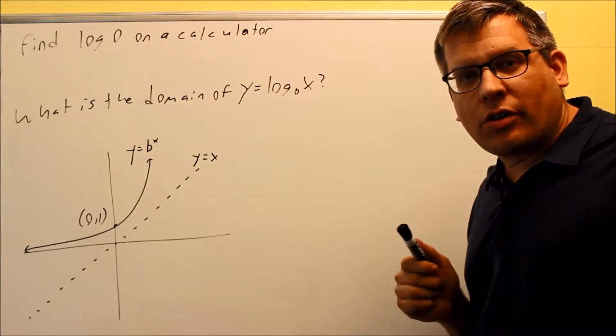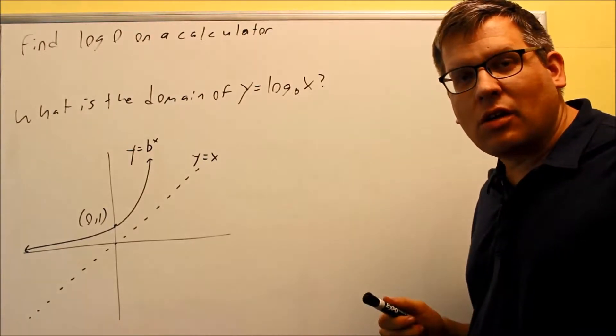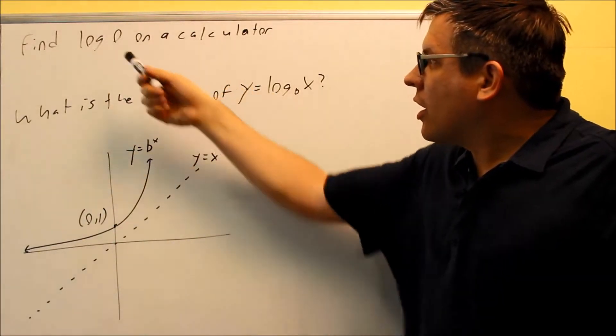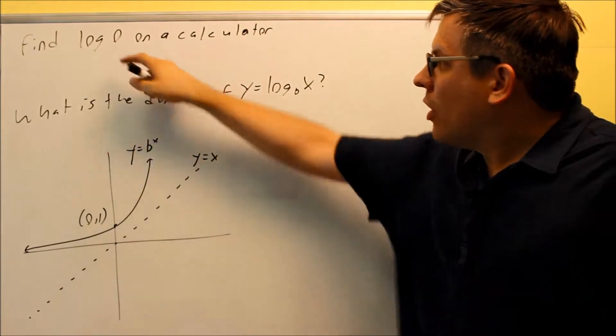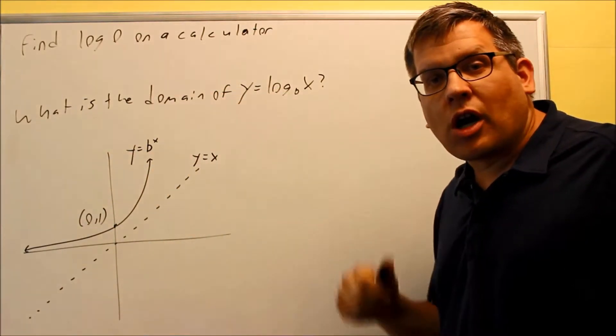Keep in mind that your calculator only will do two different types of logs: a log base 10 and a log base e, which is actually going to be your ln. In this case, I have a log and I don't have a number underneath it. But whenever you see a log with no number underneath it, it's always assumed that that's going to be log base 10.